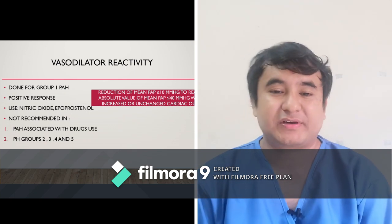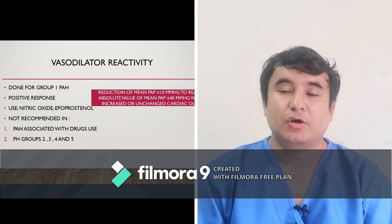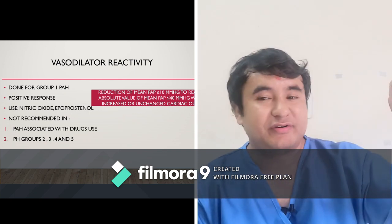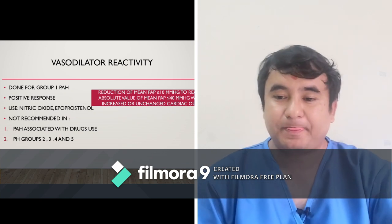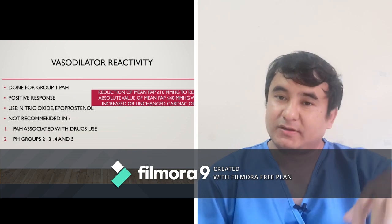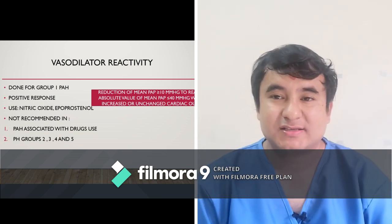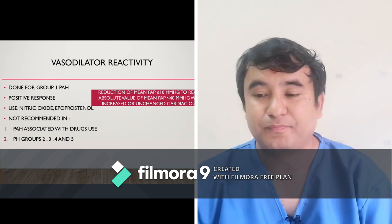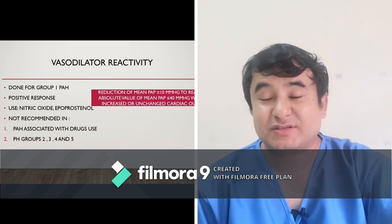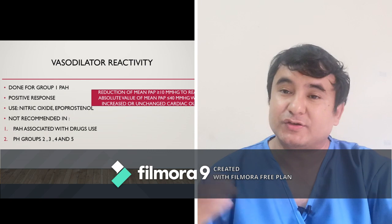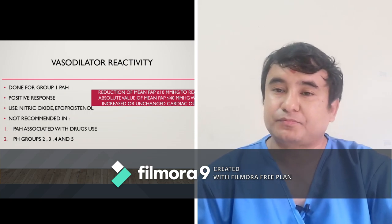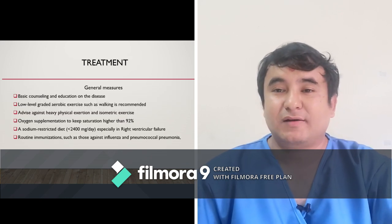Vasodilator reactivity testing can be done during right heart catheterization. You give nitric oxide or epoprostanol — these are vasodilators that should dilate the pulmonary artery vessels and reduce mean pulmonary artery pressure. If the mean PAP drops by more than 10 mmHg — for example from 30 to 20 — without a reduction in cardiac output, then the patient is considered vasodilator-reactive. In such cases, calcium channel blockers are the treatment of choice.